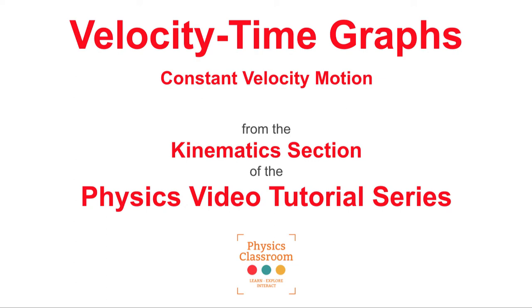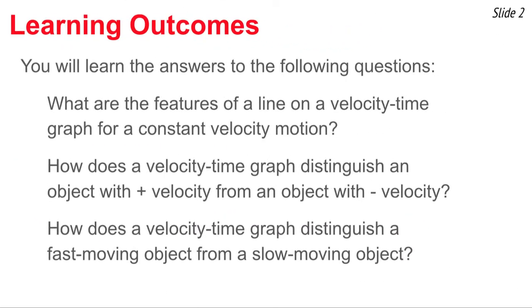Welcome to the Physics Classroom's video tutorial on kinematics. The topic of this video is velocity-time graphs for constant velocity motion. Here are the questions we wish to answer: What are the features of a line on a velocity-time graph for an object with constant velocity motion? How would such a graph distinguish between positive and negative velocity, and between a fast-moving and a slow-moving object? Let's get started.